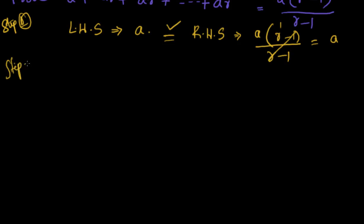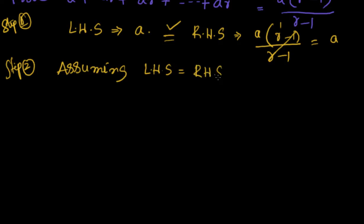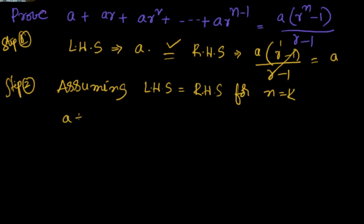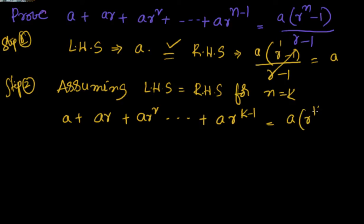Step 2: we have to assume — assuming LHS is equal to RHS for n equal to k. We will have a plus ar plus ar squared plus ar to the power of k minus 1, is equal to a into r to the power of k minus 1, by r minus 1.